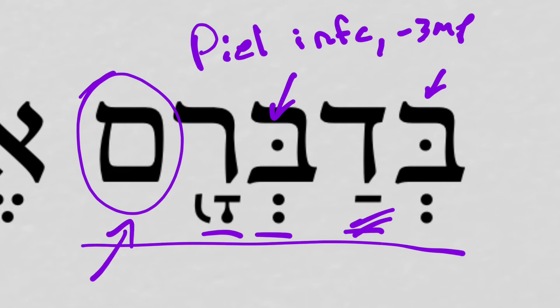This 'them' refers to Moses and Aaron. So 'when the speaking of them,' literally — but we might just smooth that out to 'when they spoke.'